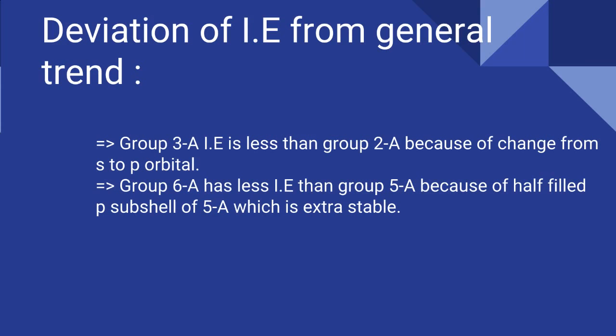Similarly, group 6A has less ionization energy than group 5A. When we move from 5A to 6A, we move from the half-filled P subshell of 5A to the unstable P subshell of 6A. Half-filled orbitals and full-filled orbitals are very stable. Since the half-filled subshell is extra stable, the electron removal from 6A is easier, so it has less ionization energy.